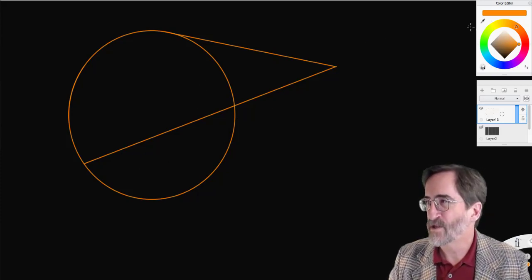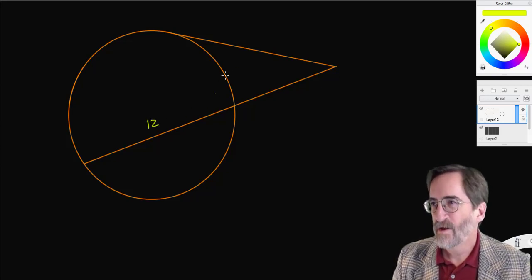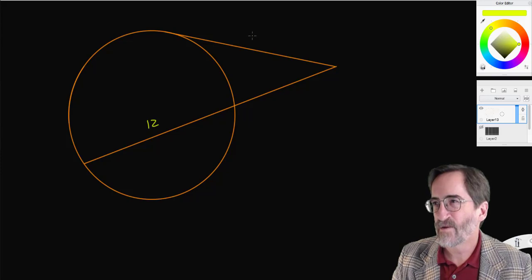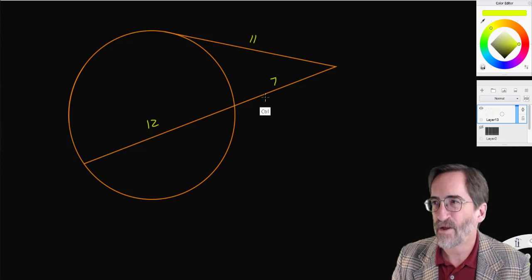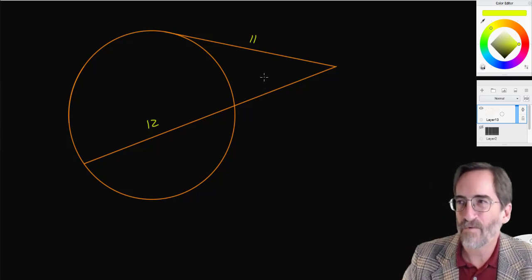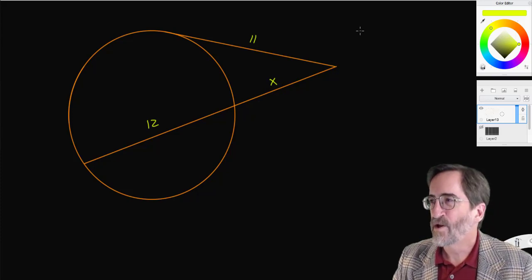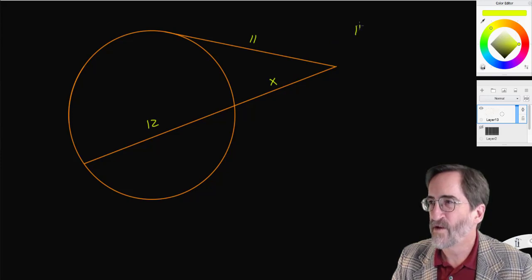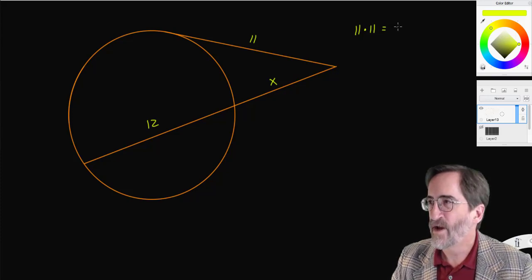So let's do an example here. Let's say this length is 12, and this length is 11, and this length is 7. Actually I need an unknown. Let's say this length is x. So here's how the formula for distance works: x, the outside part, the 11, times the whole part, 11, equals the outside part, the x, times the whole part, x plus 12.